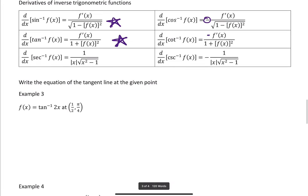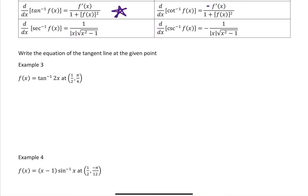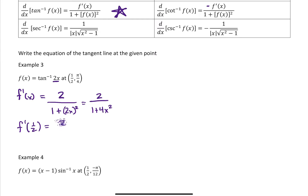For example three, we're writing the equation of a tangent line for tangent inverse of 2x at the point (1/2, pi over 4). We're already given the point, so we just need to find the slope. F prime of x is the derivative of the input, which is 2, divided by 1 plus the input squared: 2 divided by 1 plus 4x squared. Evaluating at x equals one-half gives 2 divided by 1 plus 4 times one-fourth, which is 2 over 2, equals 1.